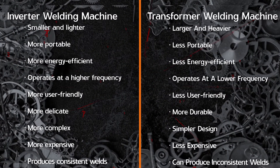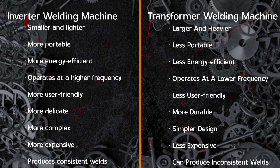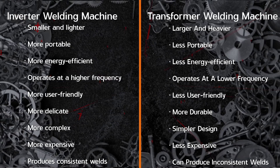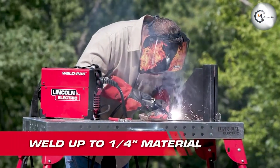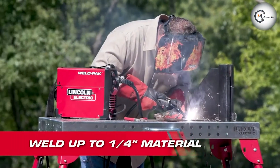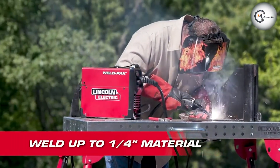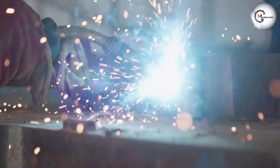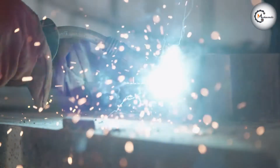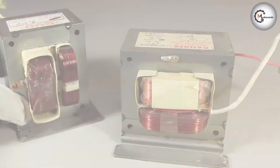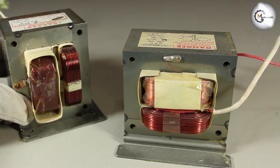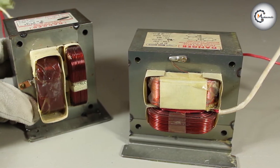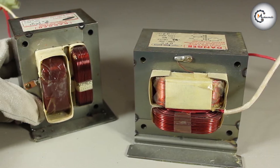Overall, both inverter and transformer welding machines have their advantages and disadvantages, and the choice between them ultimately depends on your specific needs. If you require a welding machine that is portable, energy efficient, and produces consistent welds, then an inverter welding machine may be the better choice. However, if you need a welding machine that is durable, cost-effective, and capable of handling harsh working conditions, then a transformer welding machine may be the better option.